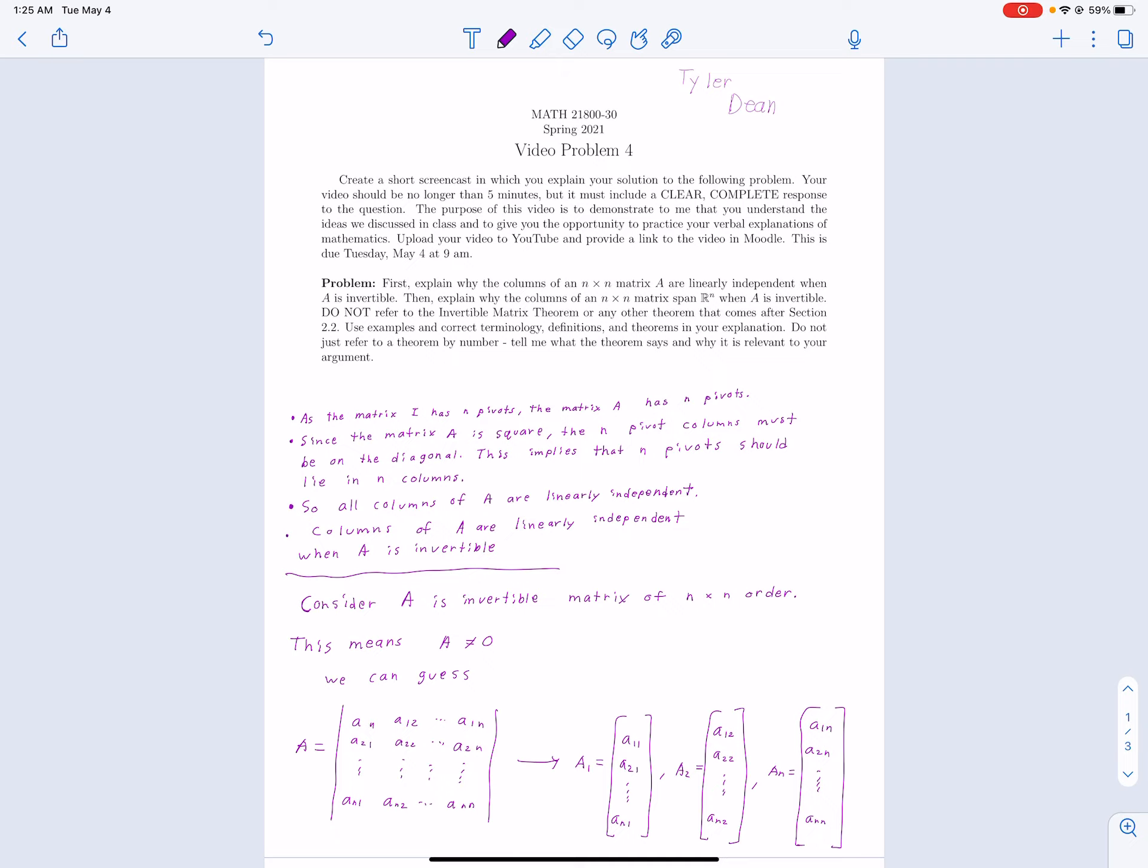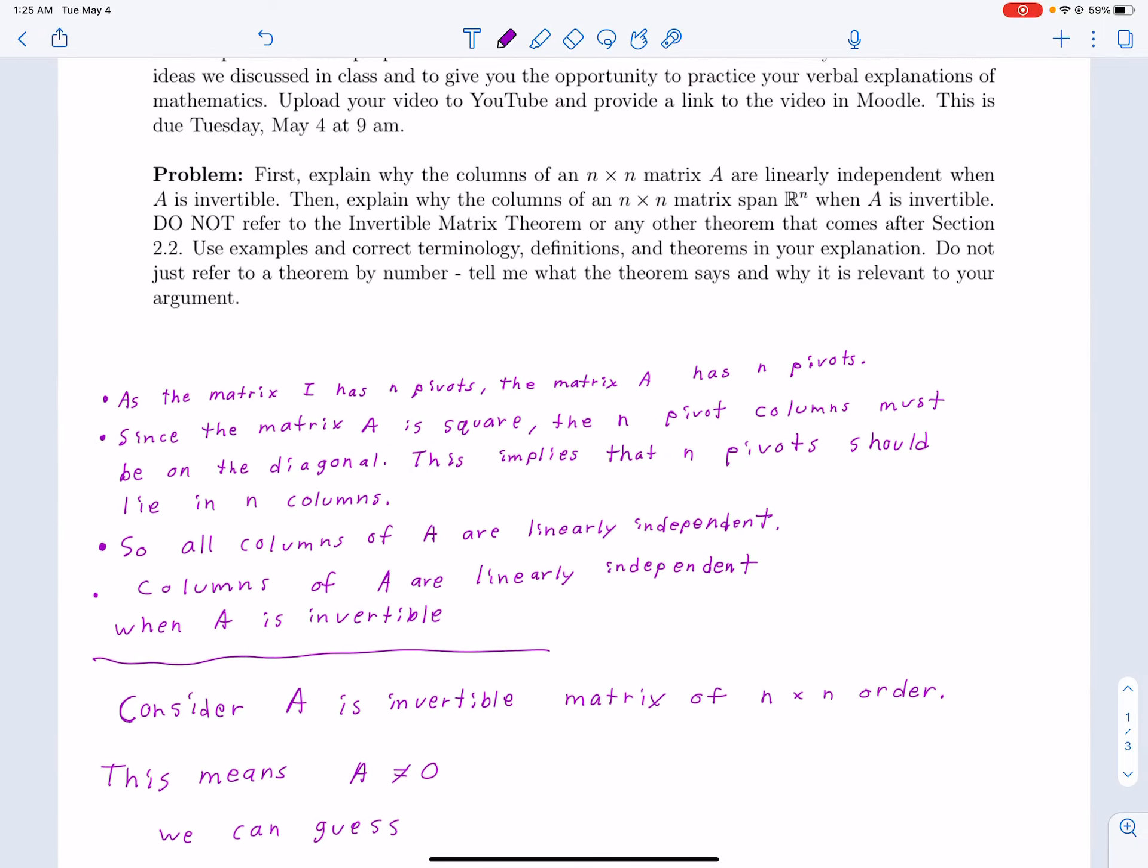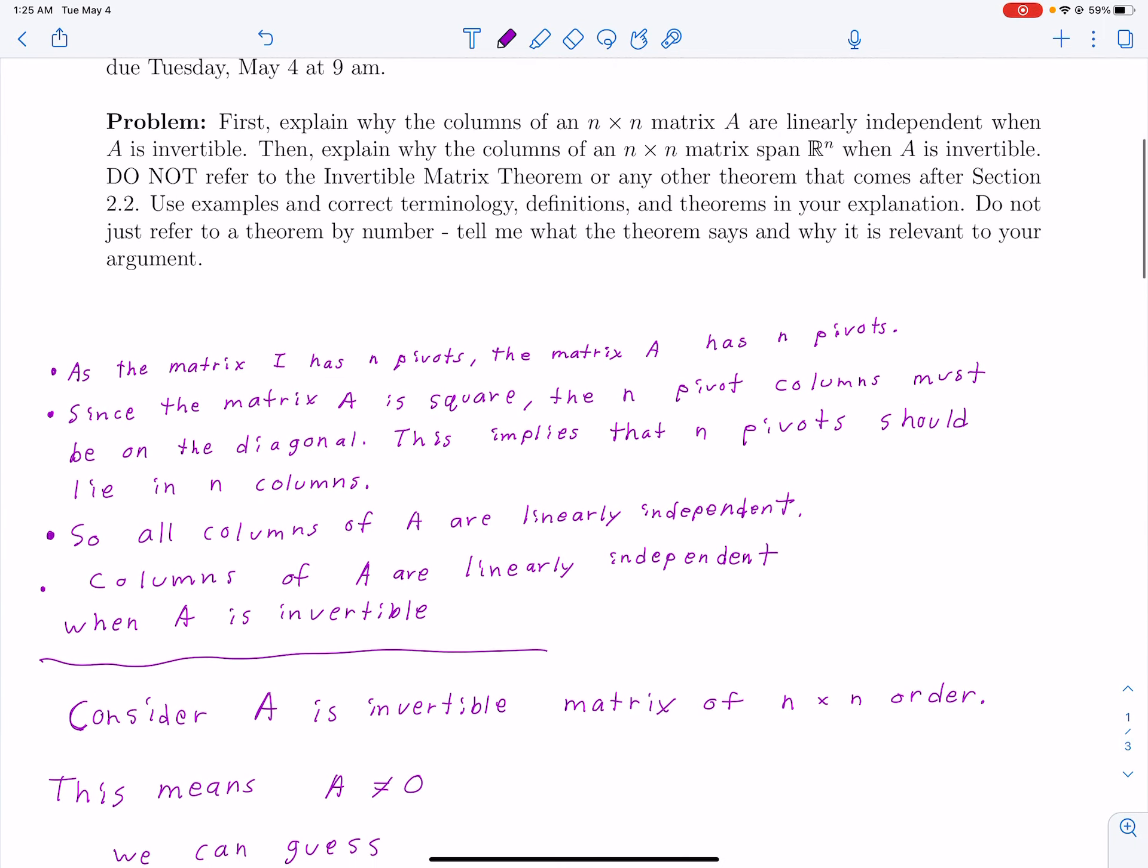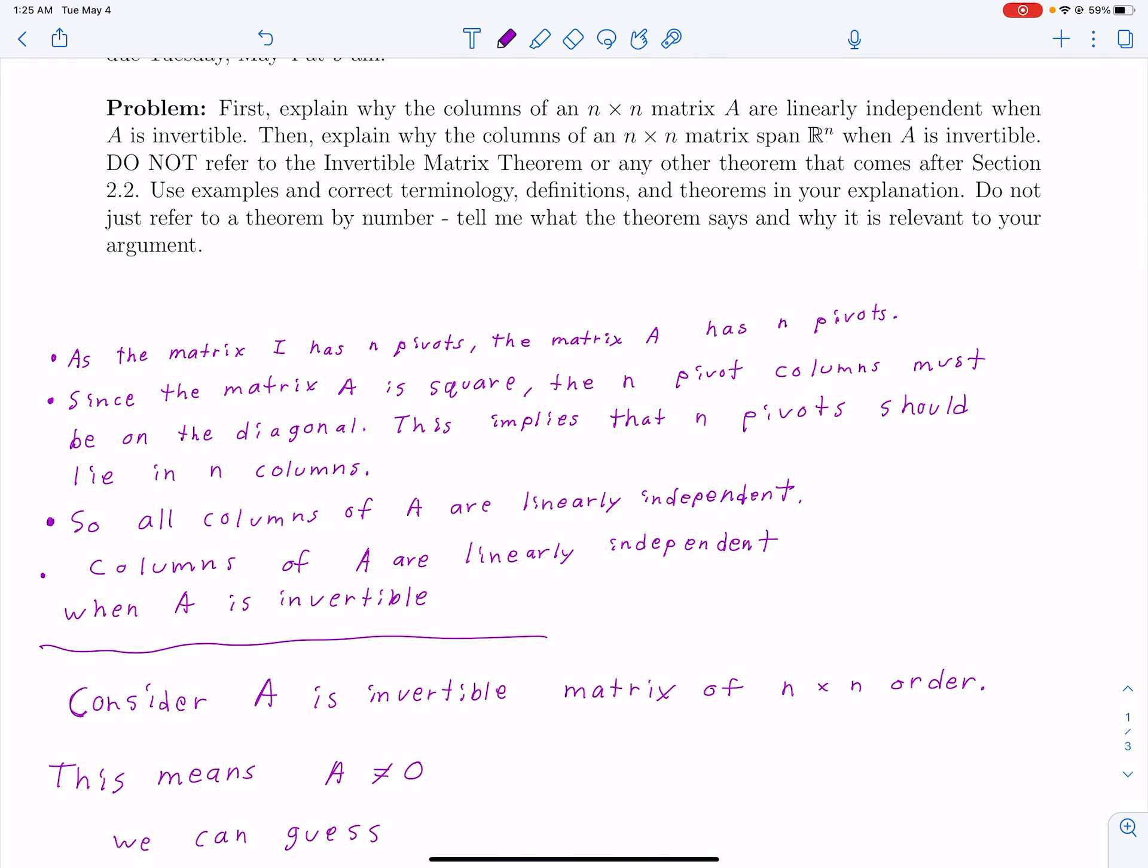Today, our problem is explaining the columns of an n by n matrix A and describing why they're linearly independent when A is invertible. We have to do this without using the invertible matrix theorem.